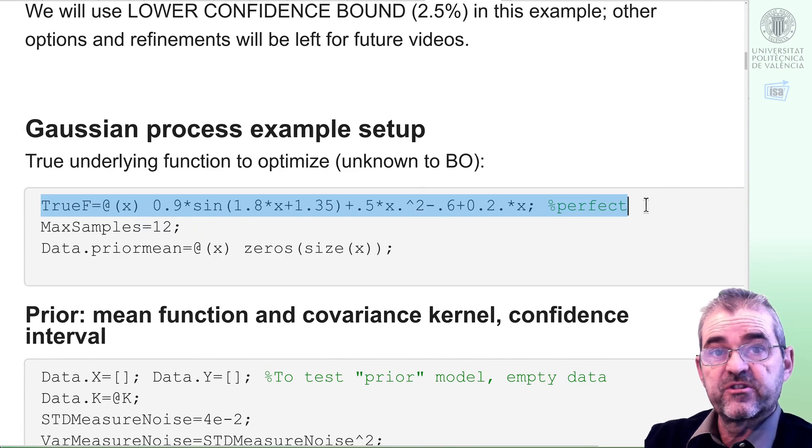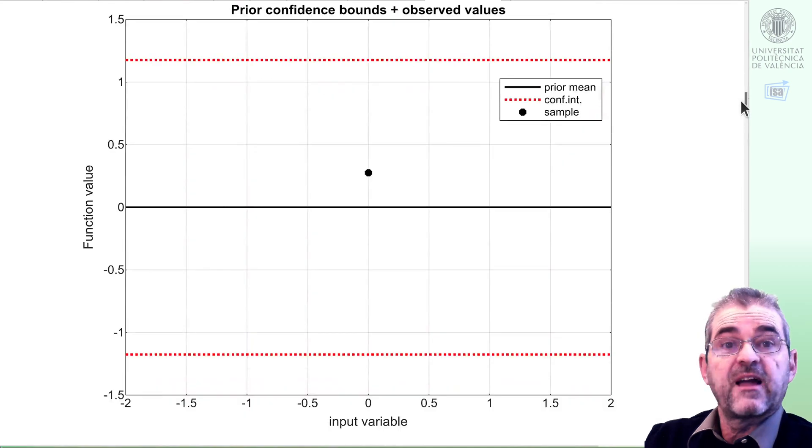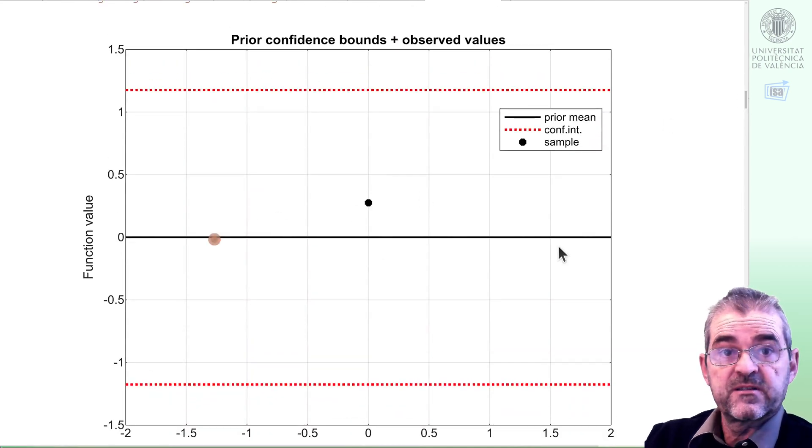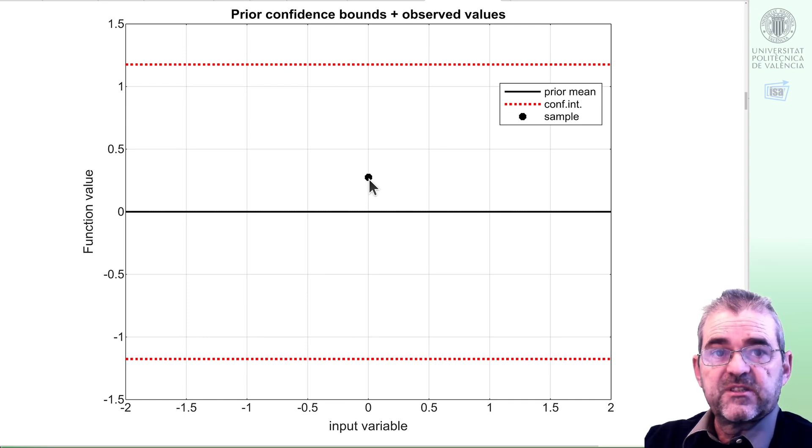We will first set the true function for my simulation, but of course this true function will not be known to my algorithm. I will have a budget of 12 samples to test and I will set a prior with zero mean and this confidence interval 95%, and I will acquire a sample just in the center of my search range. This one will be decided by just heuristics, you know, just test the center and we'll see what happens, and we will subsequently apply Bayesian optimization.